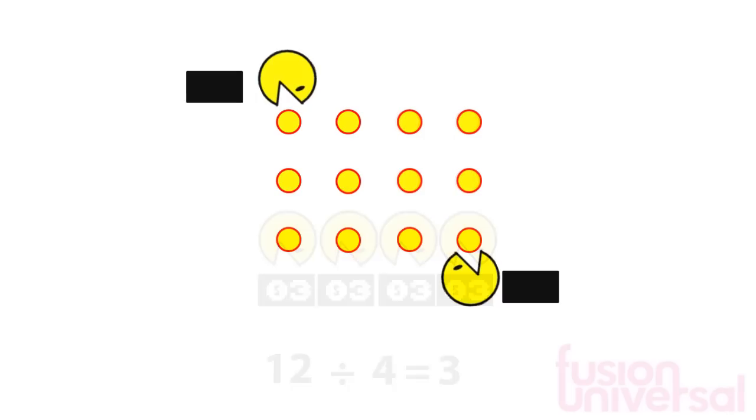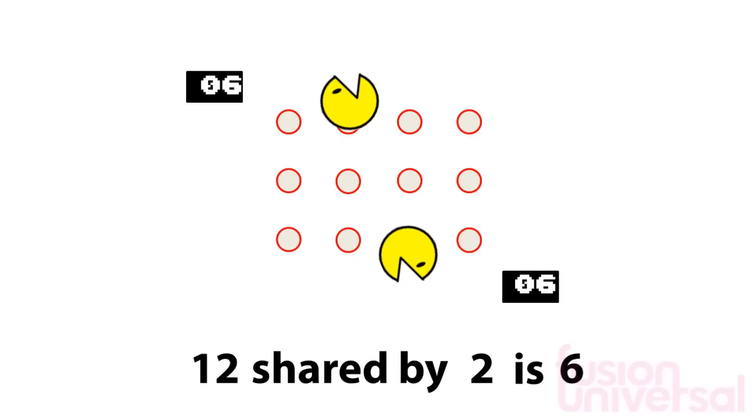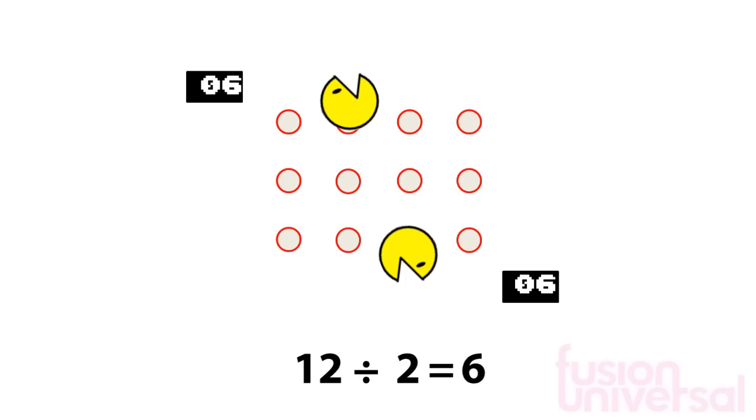This time there are only 2 creatures. They will each get 6 pills. 12 shared by 2 is 6. Or 12 divided by 2 equals 6. Or in mathematical symbols, 12 divided by 2 equals 6.